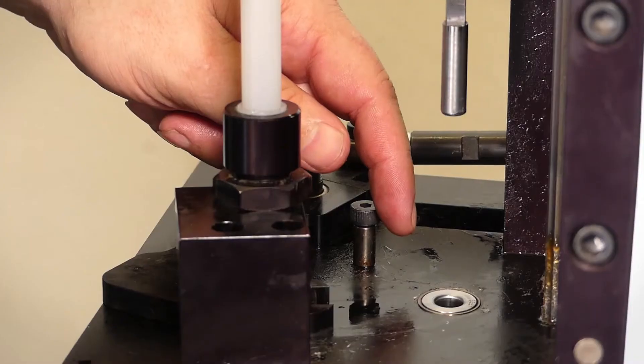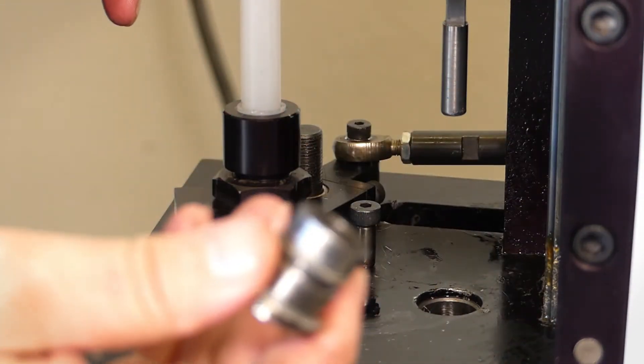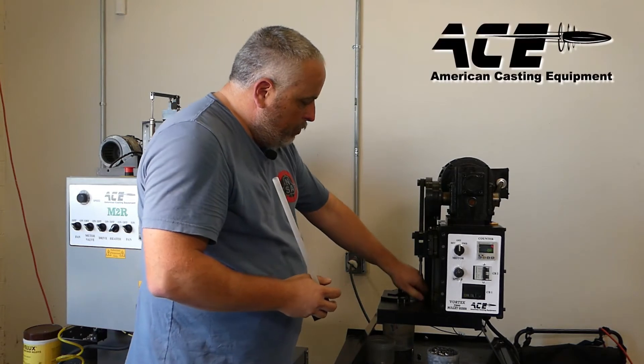And your sizer is right here, just pops right out. Pop a new one in, whatever caliber you're looking for, and it's that easy to change calibers in there.